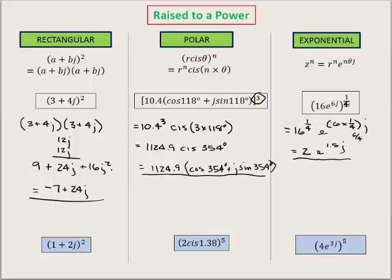That's our second example of raising to a power in rectangular, polar, and exponential complex number formats. I've left three problems for you to try. Remember: for the rectangular one, you're making it a multiplication problem; for the polar one, you bring the 5 down, raise 2 to the 5th, and multiply 5 by 1.3 radians; for the exponential, you raise 4 to the 5th and multiply 3j by 5. Stop the video, try these, and look for the answers on the website. Thank you for watching this video.